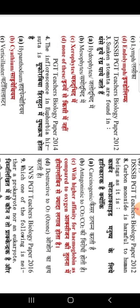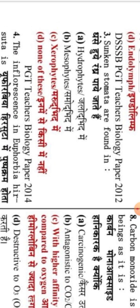The third question is: sunken stomata are found in which plants? Sunken stomata — meaning deeply embedded pores — the correct answer is xerophytes. Xerophytes grow in desert areas with water shortage and heat. Sunken stomata are a modification that helps xerophytes conserve water by reducing transpiration. This is why sunken stomata are a characteristic adaptation in xerophytes.